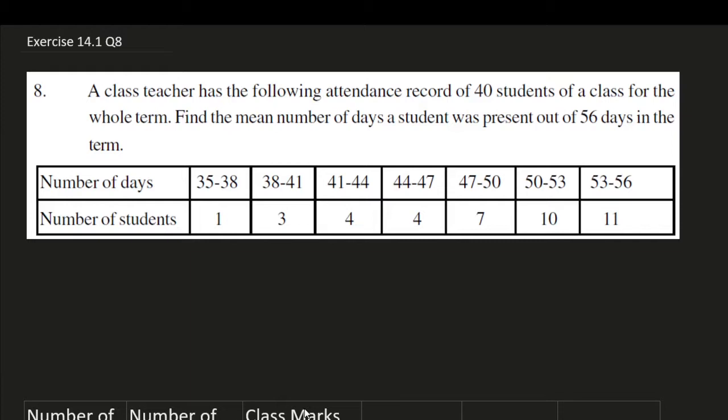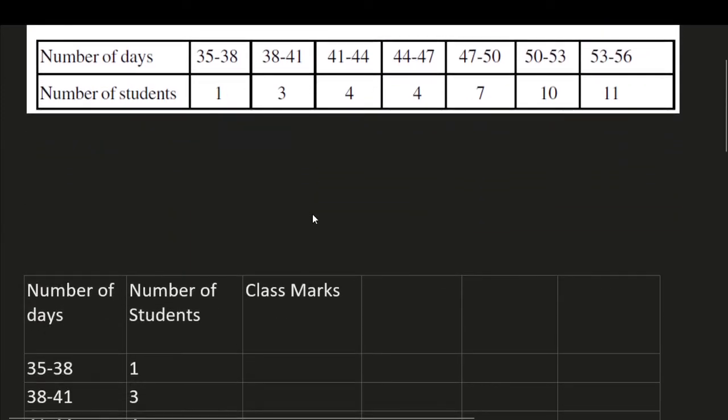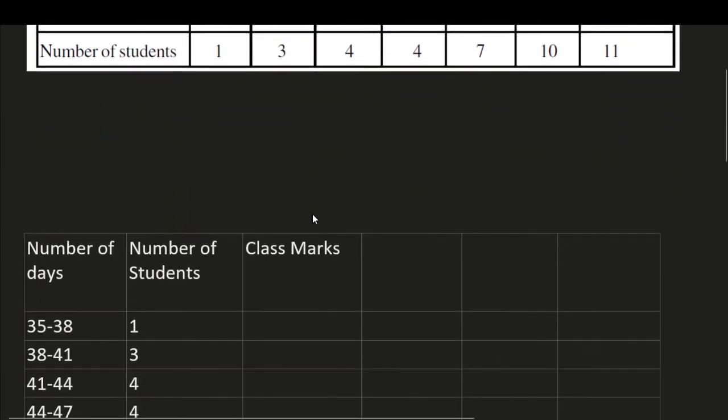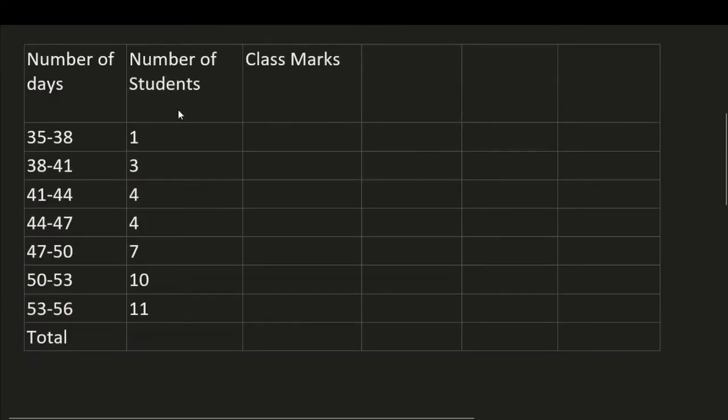Here number of days are given as class intervals, number of students as frequency. Here I have written number of days and number of students as vertical columns. This number of students is frequency, fi.